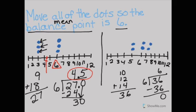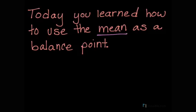So there are lots of possible answers, lots of different ways to find your mean. You just have to make sure that when you add up your data and divide by the number of dots, your mean is what you need it to be so that your scale is balanced. All right, so today you guys learned how to use the mean as a balance point.